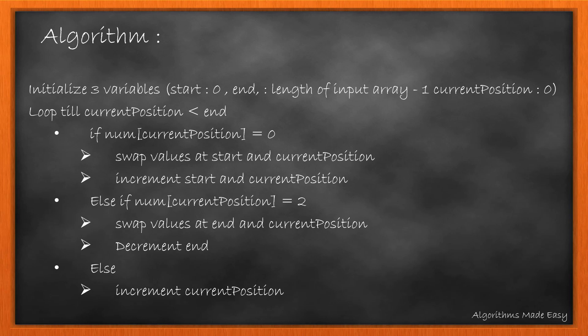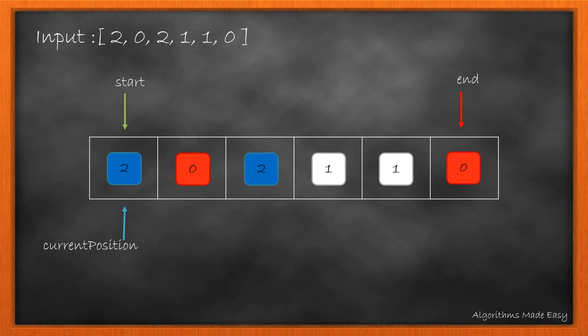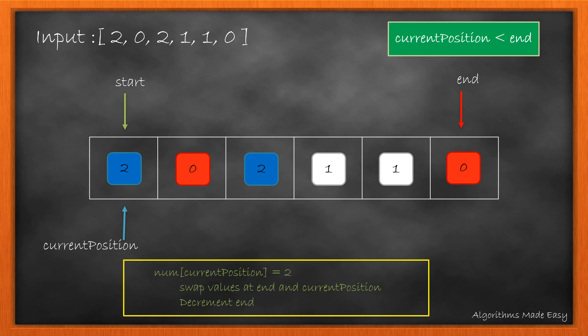Let's see it visually. Taking the previous example we have start, end, and current position as shown. First we check if the current position is less than the end. As it is, we check the value at current position. As it is 2, we swap values at end and current position and we also decrement the end.